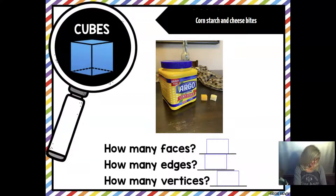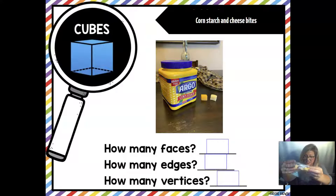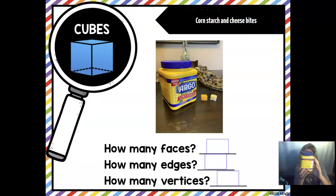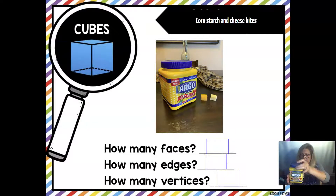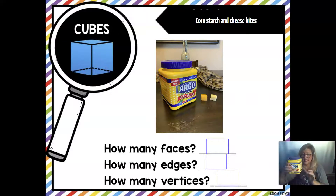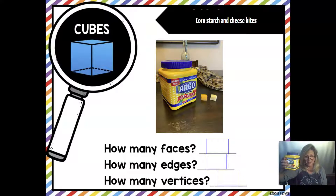Next up, let's take a look at our cubes, which would include our cheese cubes and the container that my Argo cornstarch came in. I'm asking you to disregard the lid. When I take a look, I have one, two, three, four, five, six — same size, same shape — faces. There's a word for same size, same shape. Do you remember what it is? Congruent. So there are six faces.